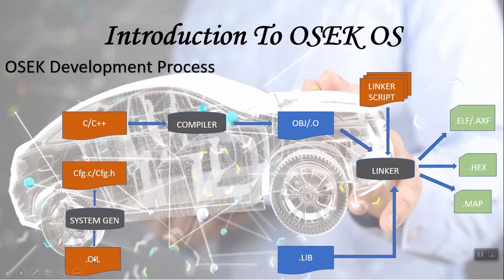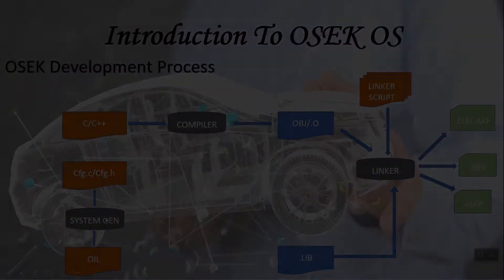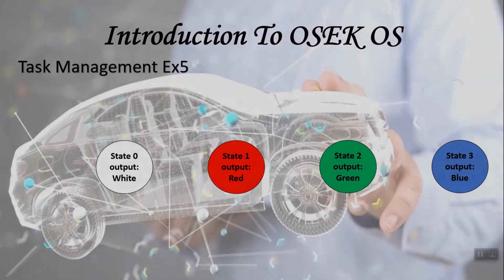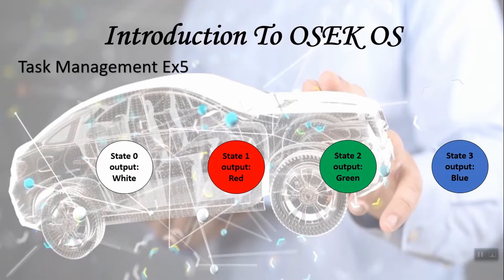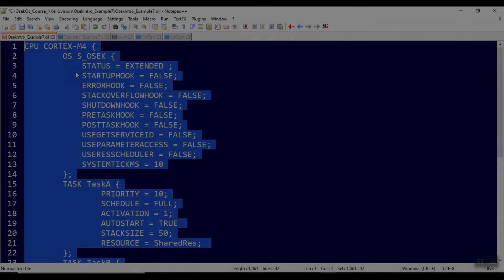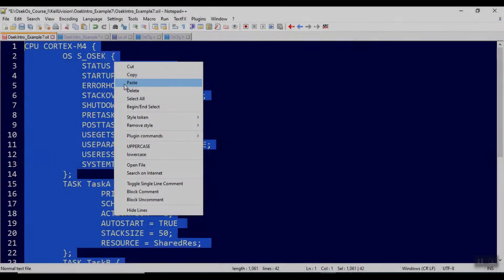We will have four states: 0, 1, 2, and 3, and the equivalent output color based on the state is white, red, green, and blue. I will select all, copy that.